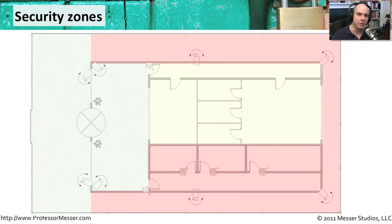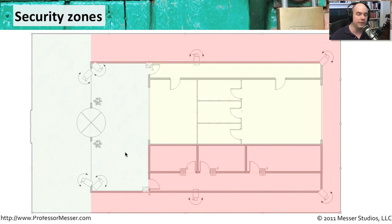They may need a card reader in one section. Maybe a certain door has to be guarded by a physical guard. And that way, you're able to create different areas of the organization where you might put cameras, where you might put different door pads, where certain areas may be completely open. And as long as you are defining these very clearly on your blueprint, you'll have a very nice system in place to help with the physical security.